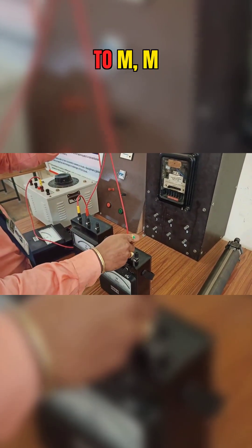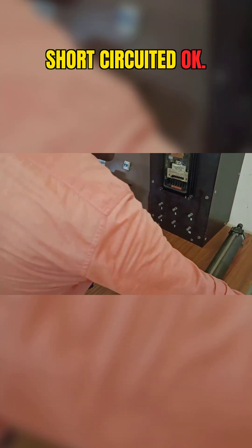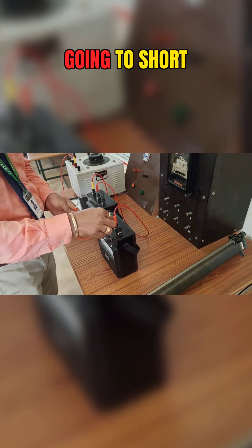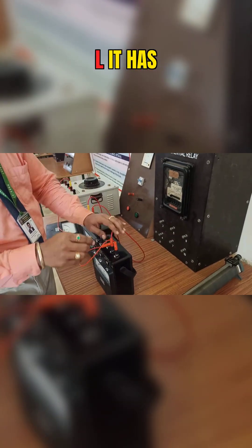From the 5 amp output, it has to go to M. M is the main, and MC has to be short-circuited. So M and C, we are going to short circuit.